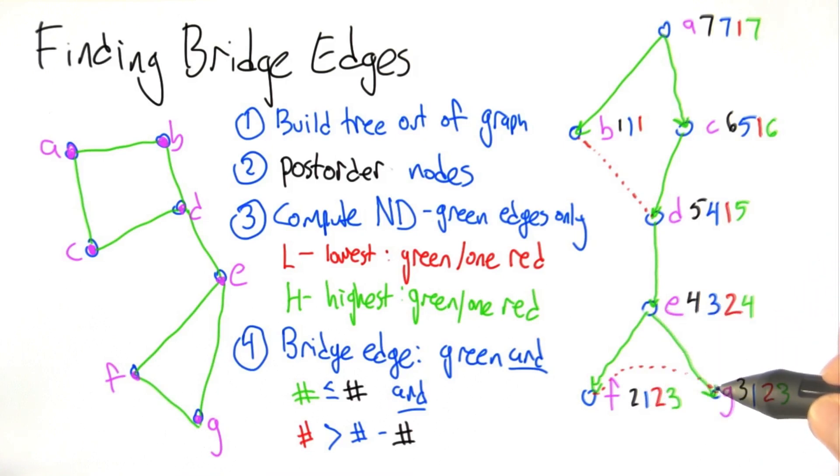Here's another green edge. We need the green number to be less than or equal to the black number. That works. So the red number needs to be bigger than the difference between the black and the blue. The difference is 2. The red number is 2, so that doesn't work.